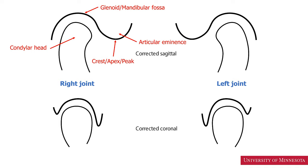The bony depression is part of the temporal bone known as the glenoid fossa or mandibular fossa or articulating fossa. Anterior to the condyle, we have the articular eminence. The most inferior part of the articular eminence is called the crest or apex or the peak of the eminence. Between the condyle and the articular fossa is the joint space. In this joint space is the interarticular disc. On a CBCT scan, the disc is not visible. However, if the joint space is narrow on a CBCT scan, there is a good chance that the disc is displaced.